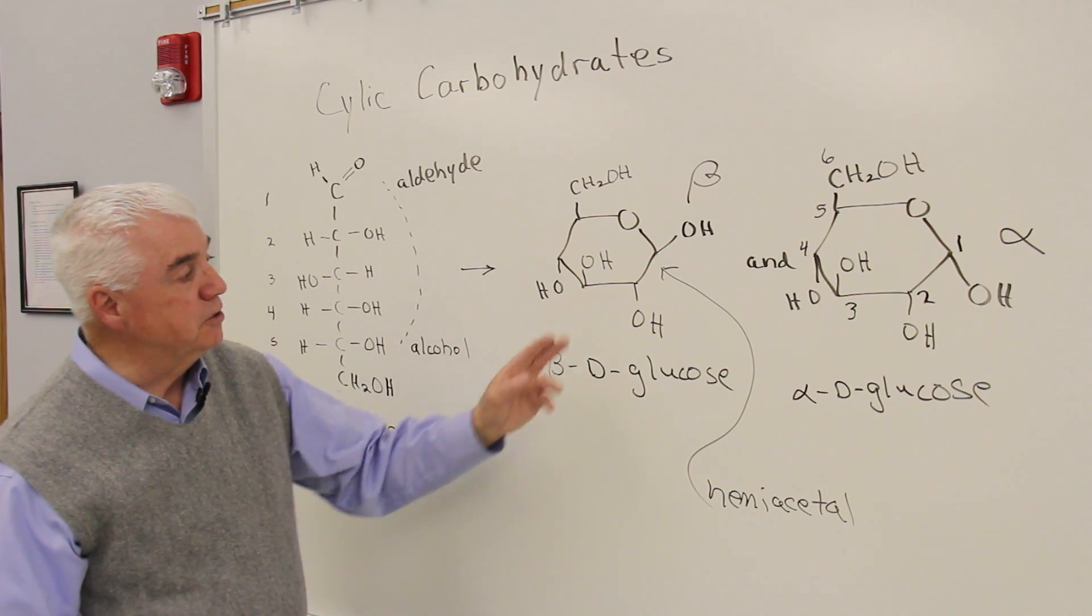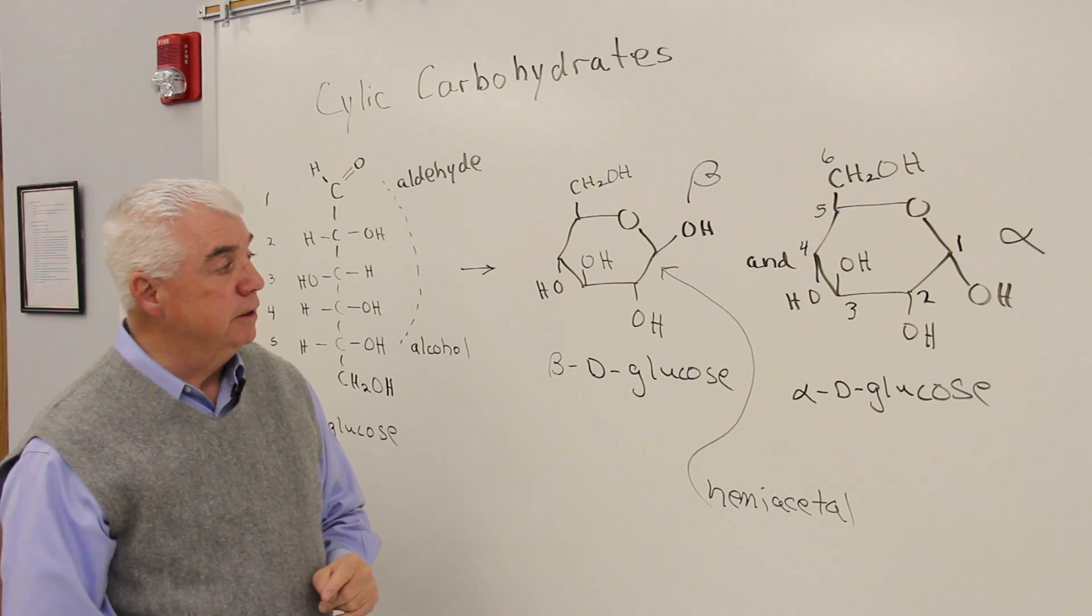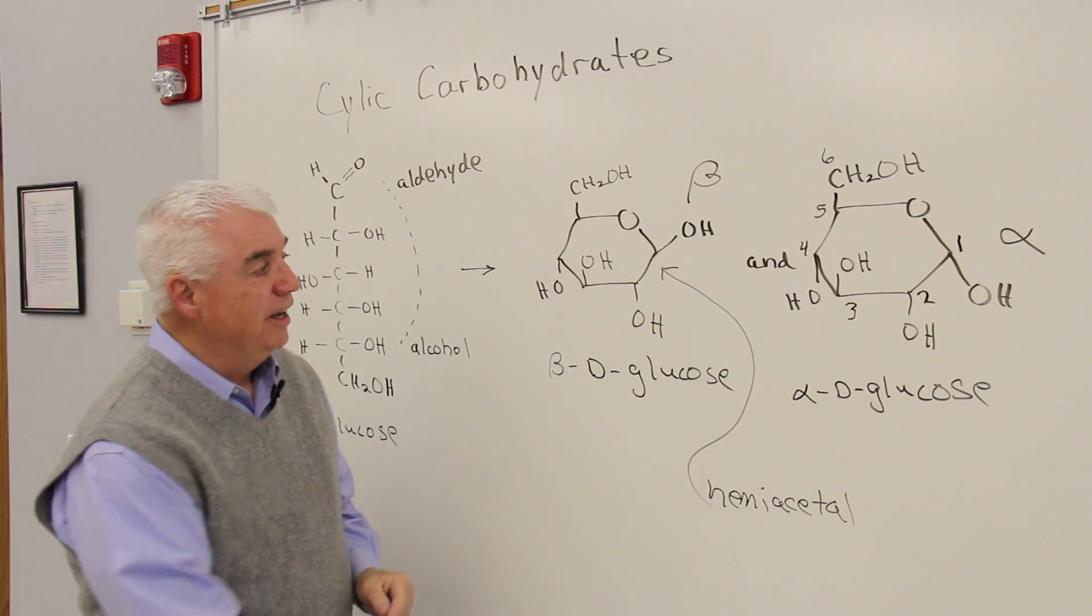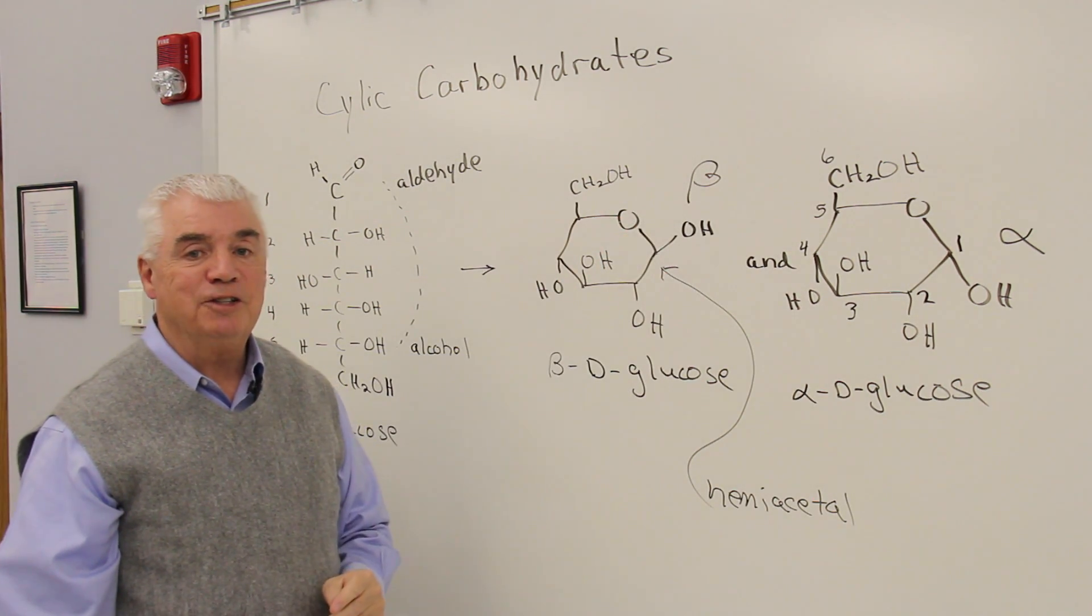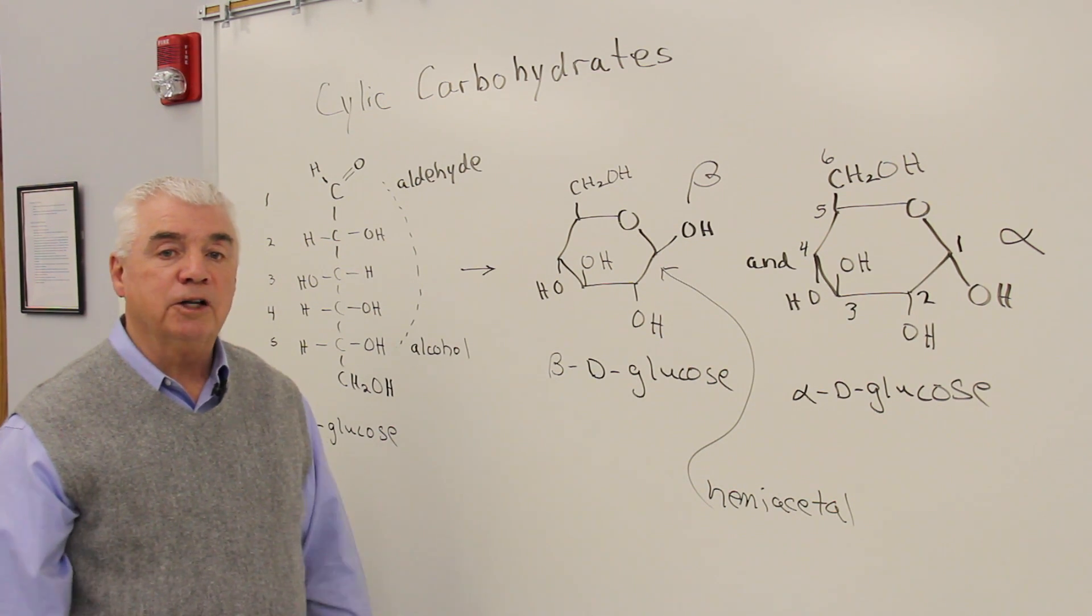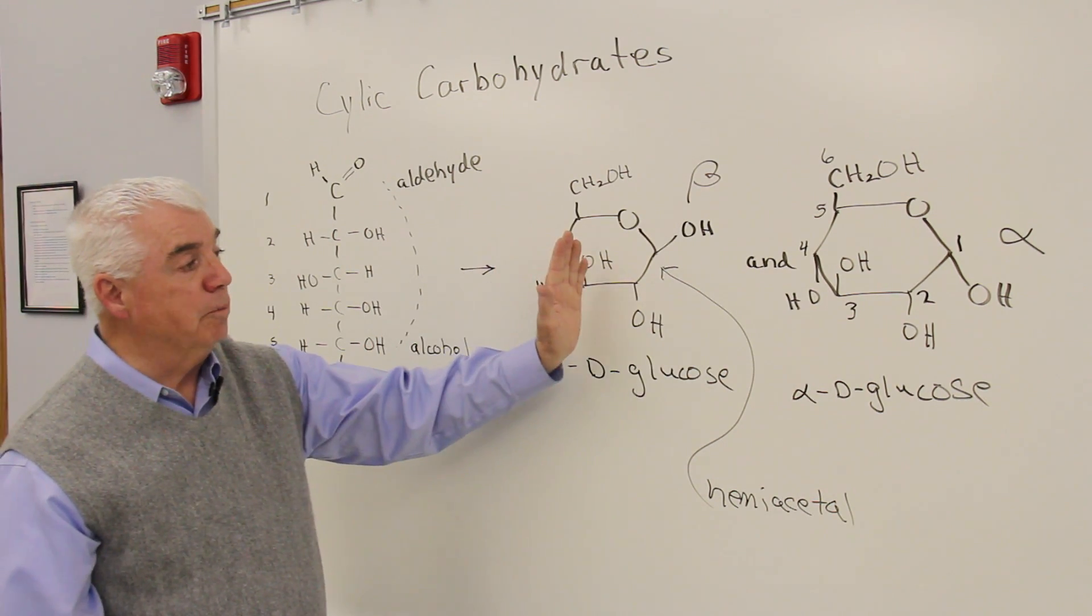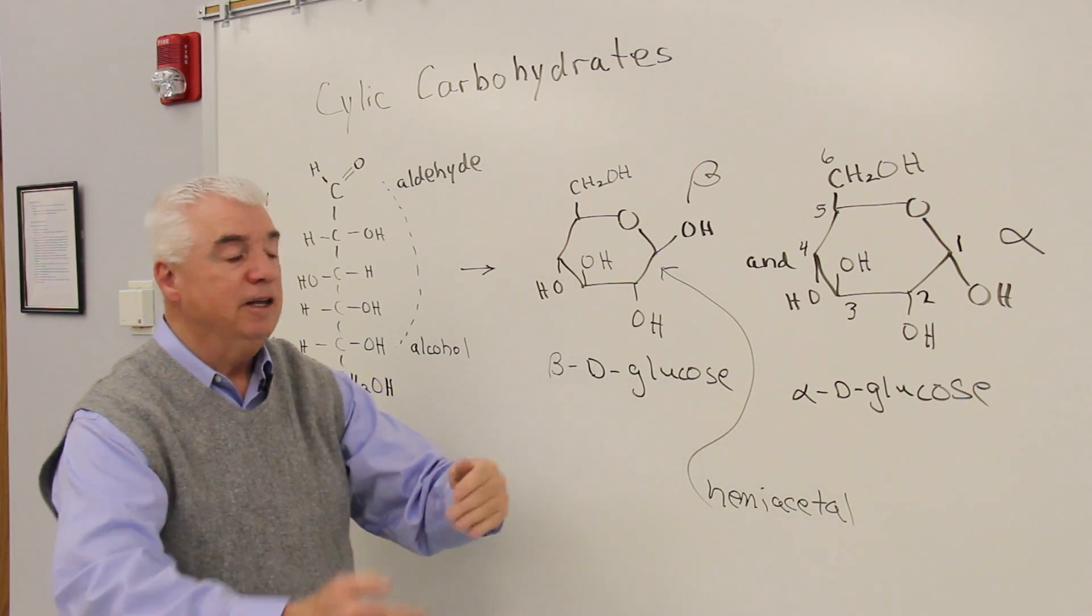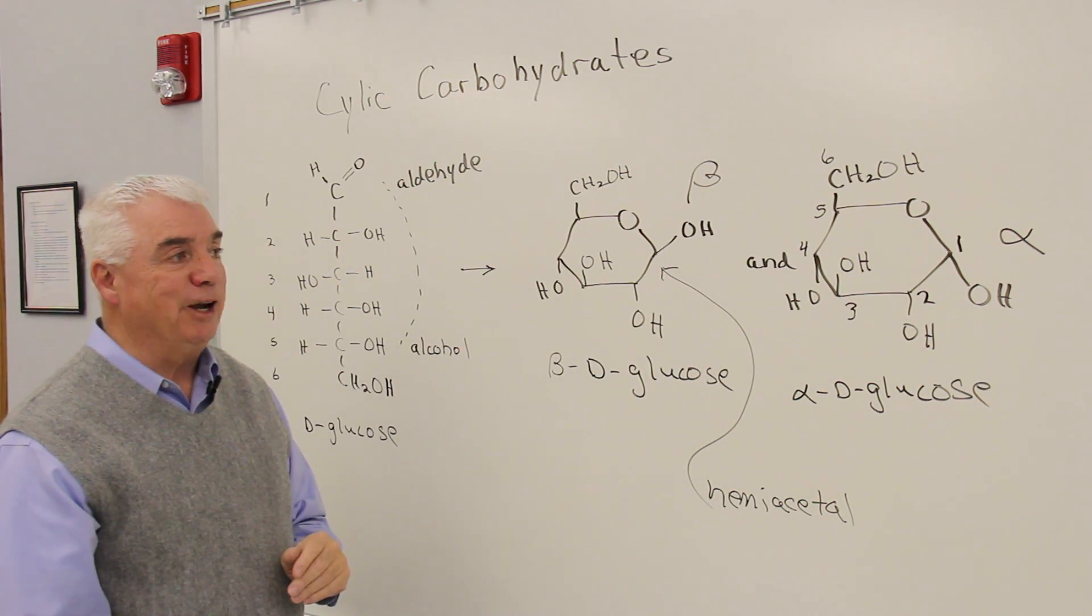And one other thing I'd like to point out is that this position right here, that carbon number one, where we had the aldehyde carbon originally, this is now a hemiacetal. It's got an OH. There's an H there that we haven't shown. The carbon is attached to two oxygens, and those are the requirements for a hemiacetal. So actually, if we were to look at a solution of glucose, what we'd find is that the open chain form is in equilibrium with these two cyclic forms, and the cyclic forms are opening and closing. So we really have a mixture of all three. The ring forms predominate, but we'd have a little bit of this open chain form too.